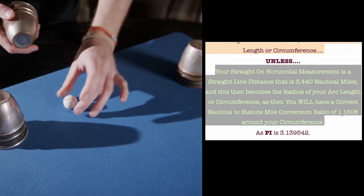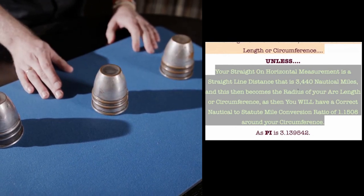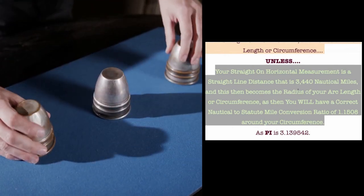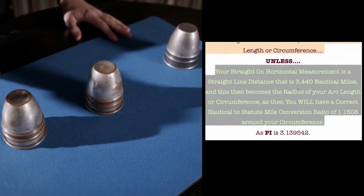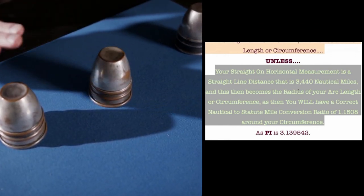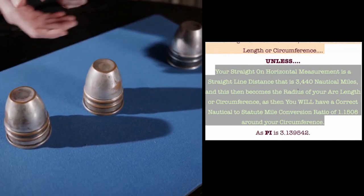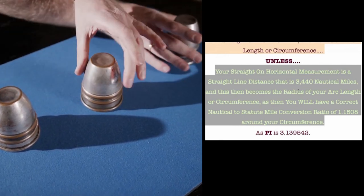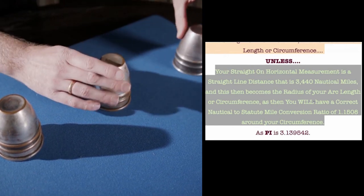That is the only way mathematically that you will get that to happen where the ratio will fit both the radius and the circumference. This is normally only the radius, but in this one instance you have the radius and the circumference. But the radius, and this is the important part, must be measured horizontally along the surface of earth and not come from the center of a sphere. That's the important part. Because that's not a nautical mile measurement.